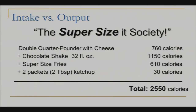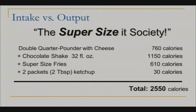This is a great example of intake versus output. We are a supersized society. Take a typical fast food meal: a double quarter pounder with cheese, chocolate shake, supersized fries, and two packets of ketchup — 2550 calories for this one meal. Think back to your maintenance calories at your current weight. Would you have much left for the day? Remember, this is one meal with no other eating throughout the day. Now think about this at your goal weight — you might have eaten your calories for two days with a meal like this.